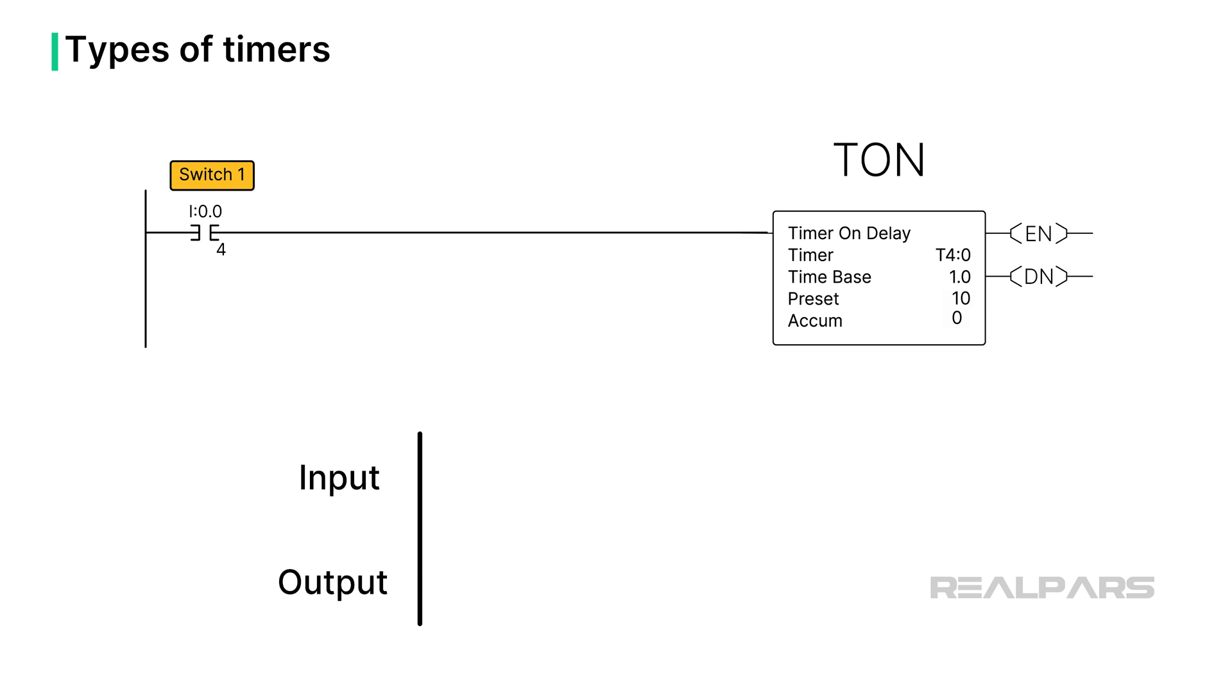The timer just illustrated is called an on-delay timer. When the logic upstream of the timer on the same rung is true, the timer is enabled. The timer times until the preset is reached and the done bit is set. If the timer input is no longer enabled, the timer resets. Once set, the done bit stays true until the rung goes false.